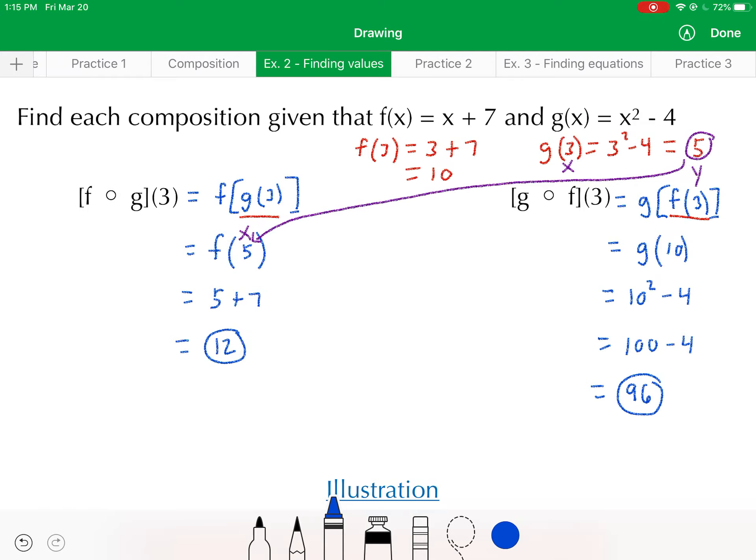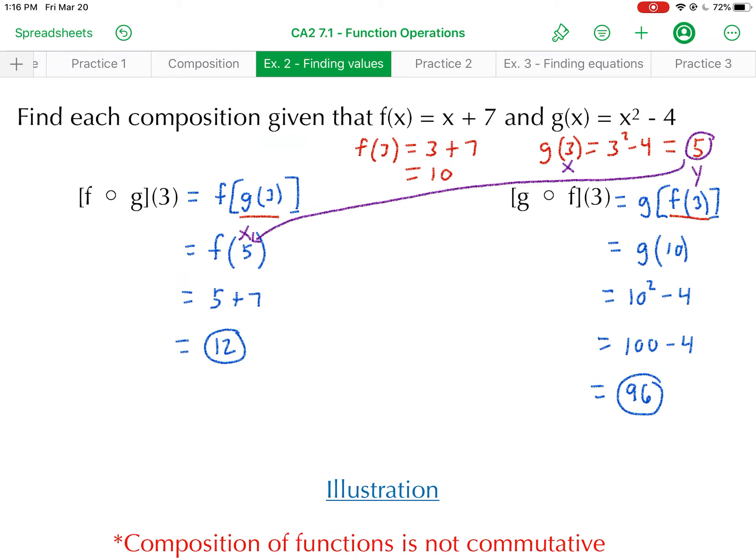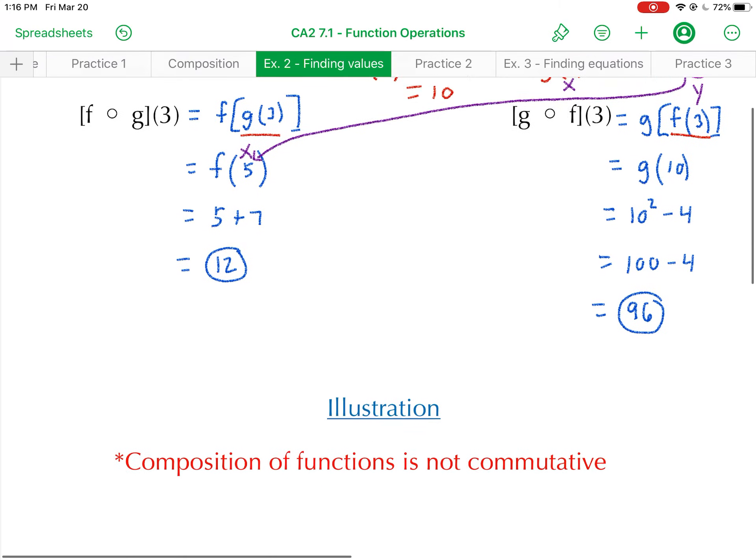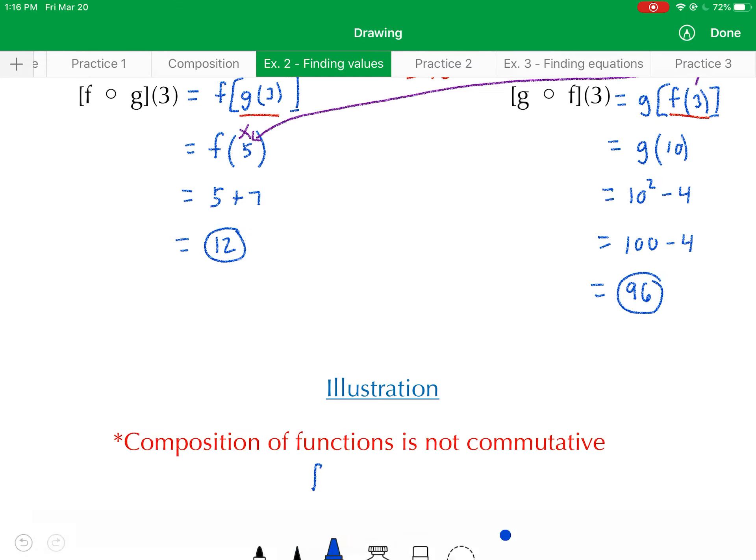Now last thing I want to notice before we end the video here. Notice that these two results are different. f of g of 3 did not yield the same result as g of f of 3. And remember, I started off the lesson by saying that we want to think of composition as an operation between two functions. So these examples show that composition is not commutative. Finding f of g of x does not always equal g of f of x, which is unlike the operations of addition and multiplication. You think if I did f times g of x, that would give me the same as g times f of x every time, and the same thing with addition.